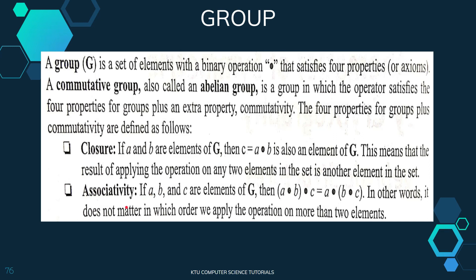The second property is associativity. For three members A, B, and C, we perform the same binary operation. So (A operation B) operation C is equivalent to A operation (B operation C). This property is associativity.